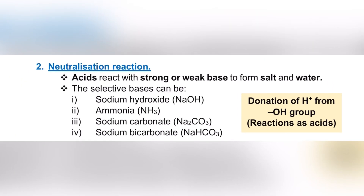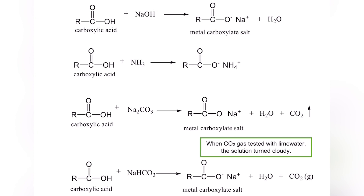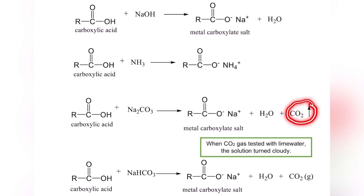Next, we go to neutralization reactions. In this part, the acid is going to react with a strong or weak base to form salt and water. The acid will donate H⁺. The bases we can use are NaOH, ammonia, sodium carbonate, and sodium bicarbonate. For sodium carbonate and bicarbonate, you need to be careful because we will also produce CO₂. The reaction will produce a metal carboxylate salt. For ammonia, it will attract NH₄⁺ — for all others, it attracts Na⁺ only. The hydrogen you donate will combine with another hydrogen and oxygen to produce water as a side product.